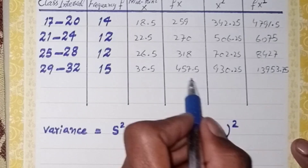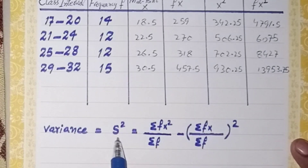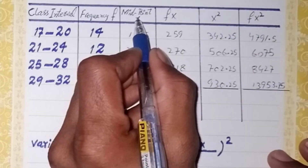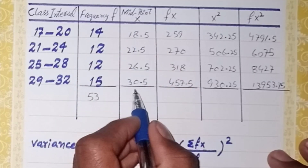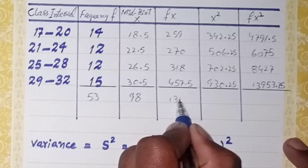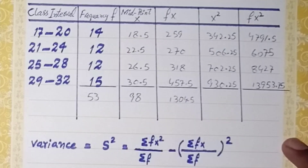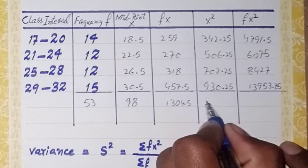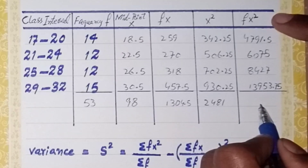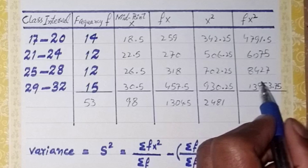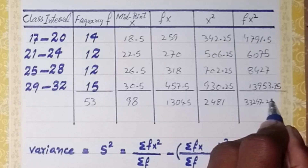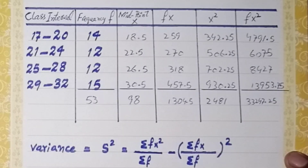We now calculate the sum of each column to put into the formula. The total of the frequency column (sigma f) is 53. The total of the fx column (sigma fx) is 1304.5. The total of the x² column is 2481. The total of the fx² column (sigma fx²) is 33,247.25.